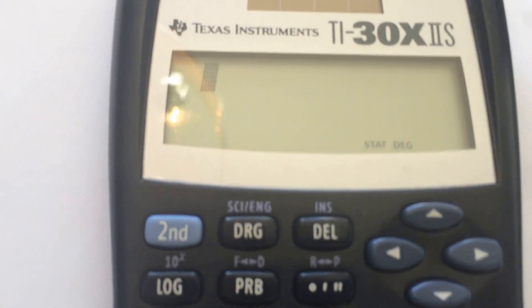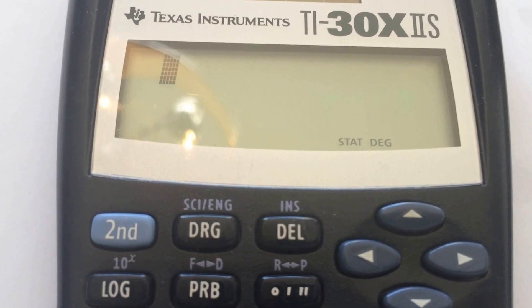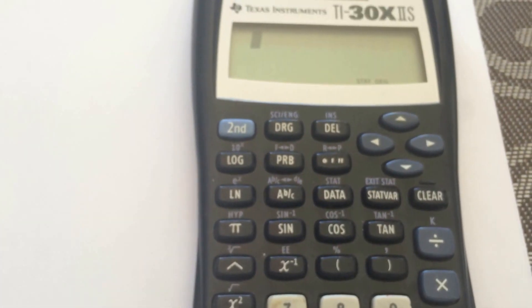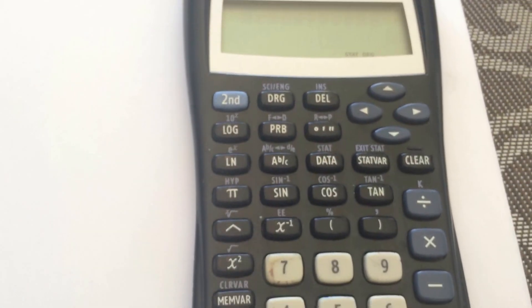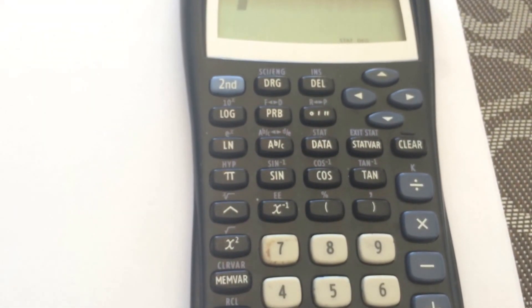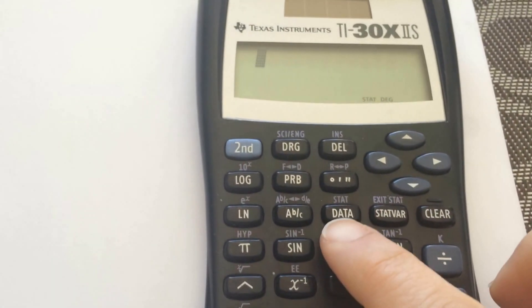You'll see stat and degree on your calculator at the bottom. Now, it doesn't have to be degrees, but it has to be in stats mode. And then you're going to input the data. So you're going to go to data, which is right here.